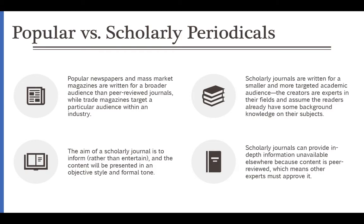The aim of a scholarly journal is to inform, whereas mass market magazines are more for entertainment. Scholarly journals are more unbiased and very formal — the way you'll be writing as well. They can provide in-depth information unavailable elsewhere because they're peer reviewed. Peer review in a scholarly journal means other experts in that field — like other psychologists reviewing Psychology Today — are checking the information and confirming that the research is actually correct. It's not just someone writing a story and publishing it.